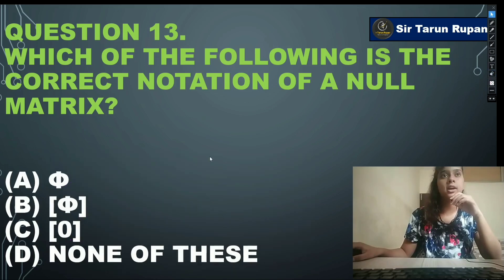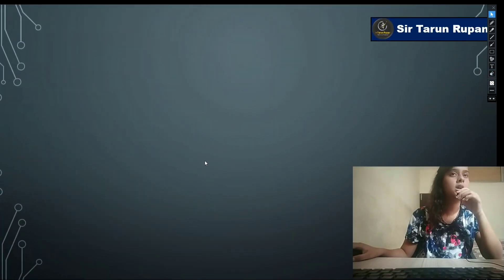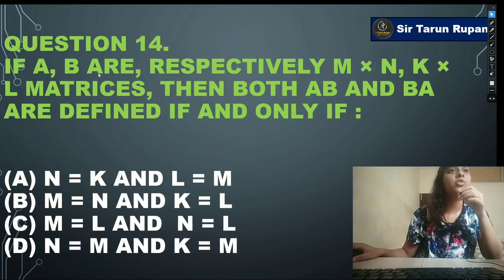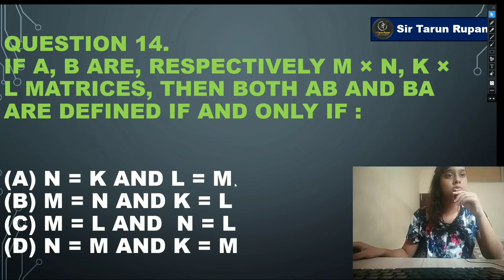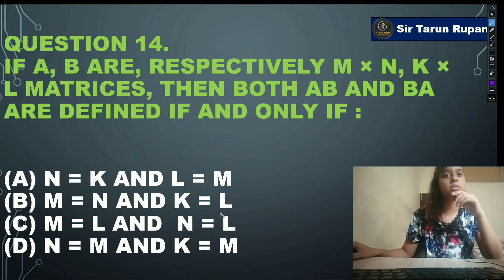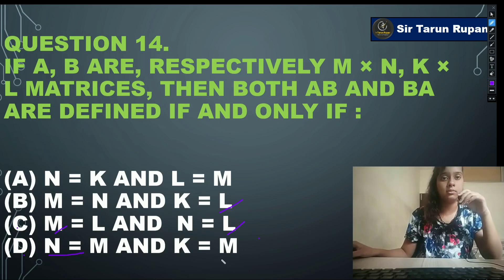Second-to-last question: if A and B are m×n and k×l matrices respectively, then both AB and BA are defined if and only if — option A: n=k and l=m; option B: m=n and k=l; option C: n=k and n=m. Our correct answer is option A: n=k and l=m.